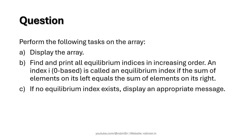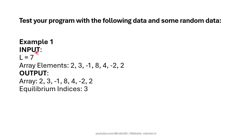We need to perform the following tasks on the array: first, display the original array; next, find and print all the equilibrium indices in increasing order. An index i, which is zero-based, is called an equilibrium index if the sum of elements on its left equals the sum of elements on its right. If no equilibrium index exists, we display an appropriate message. We've entered size seven and seven elements, and the equilibrium index displayed is three.